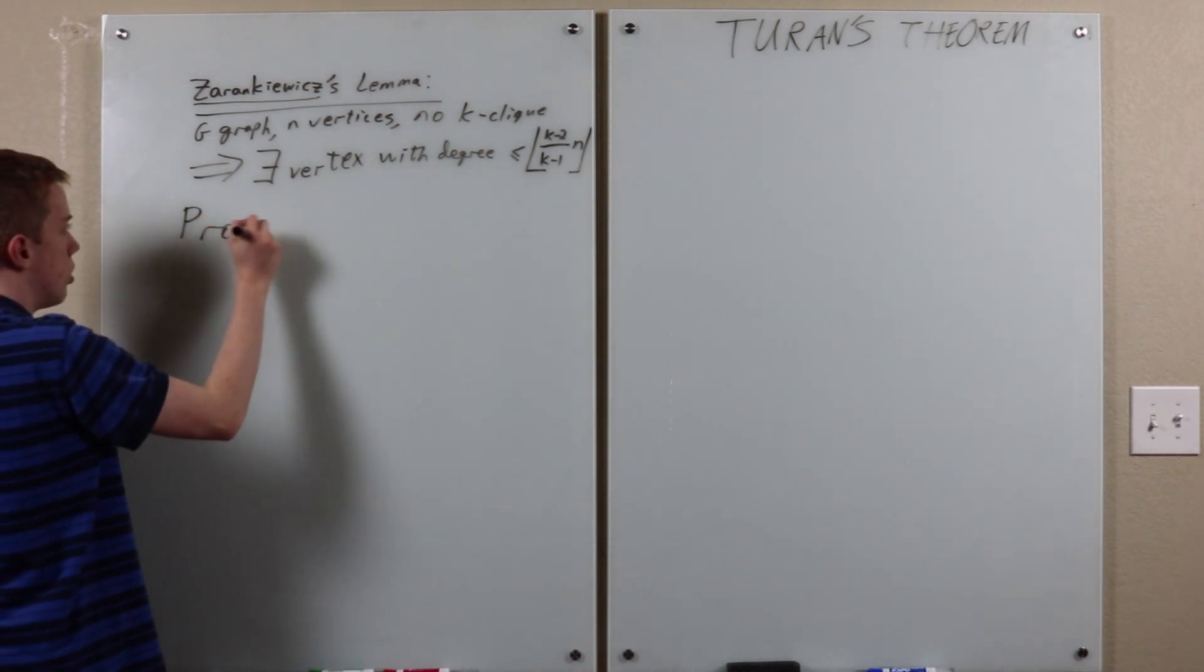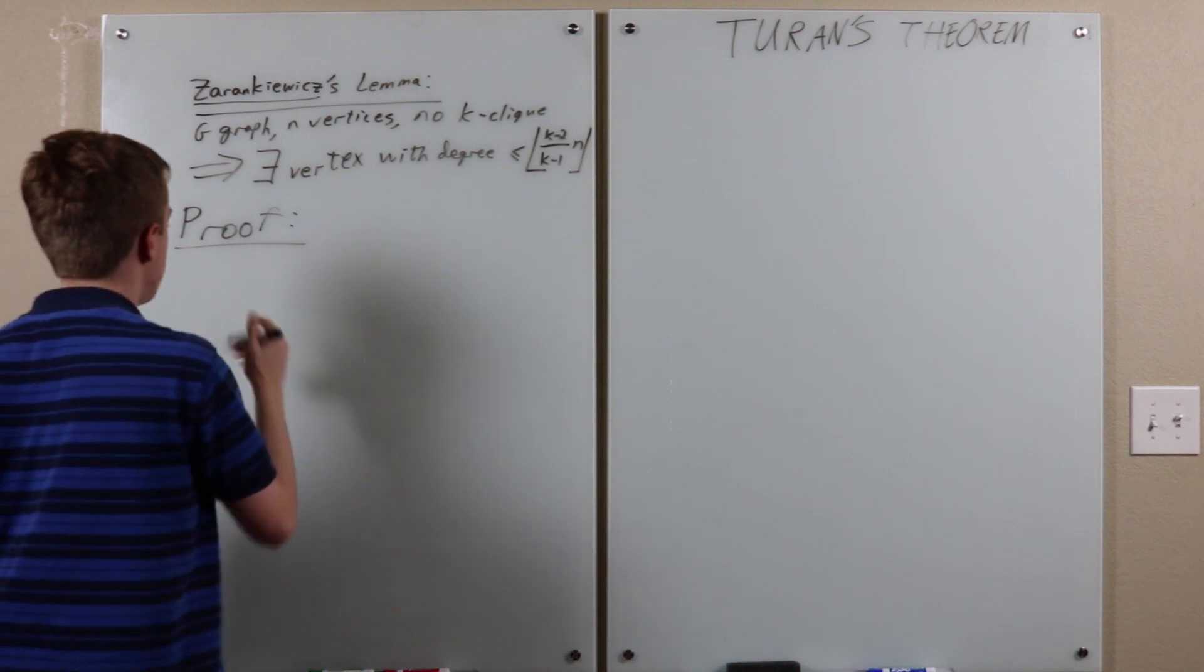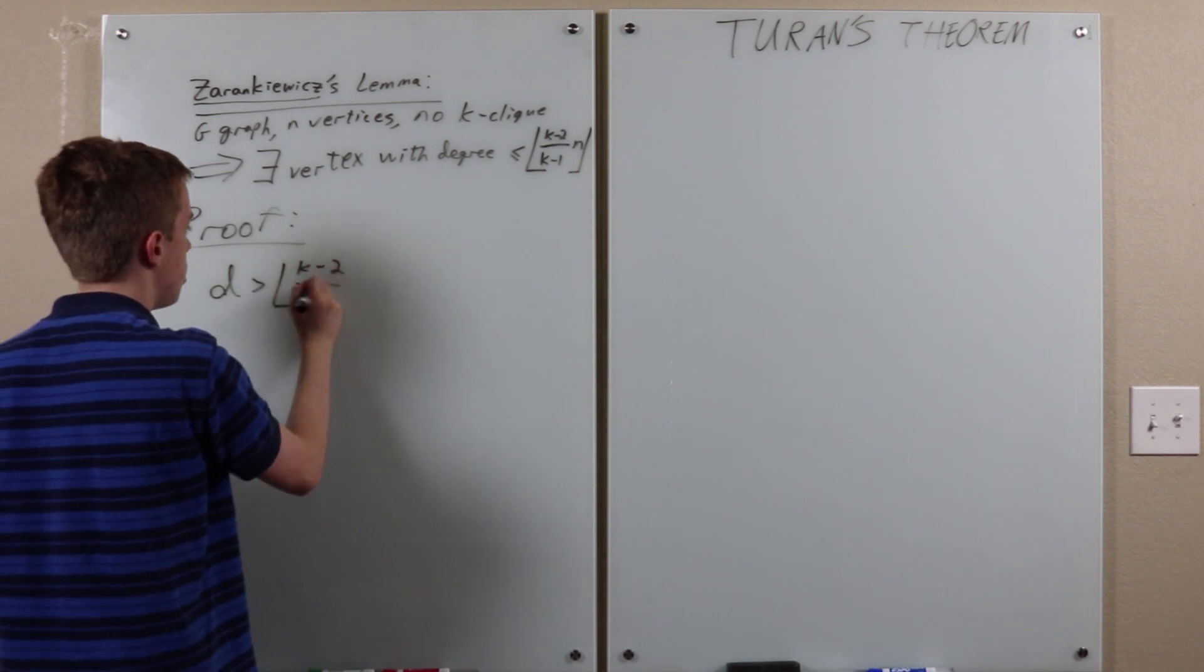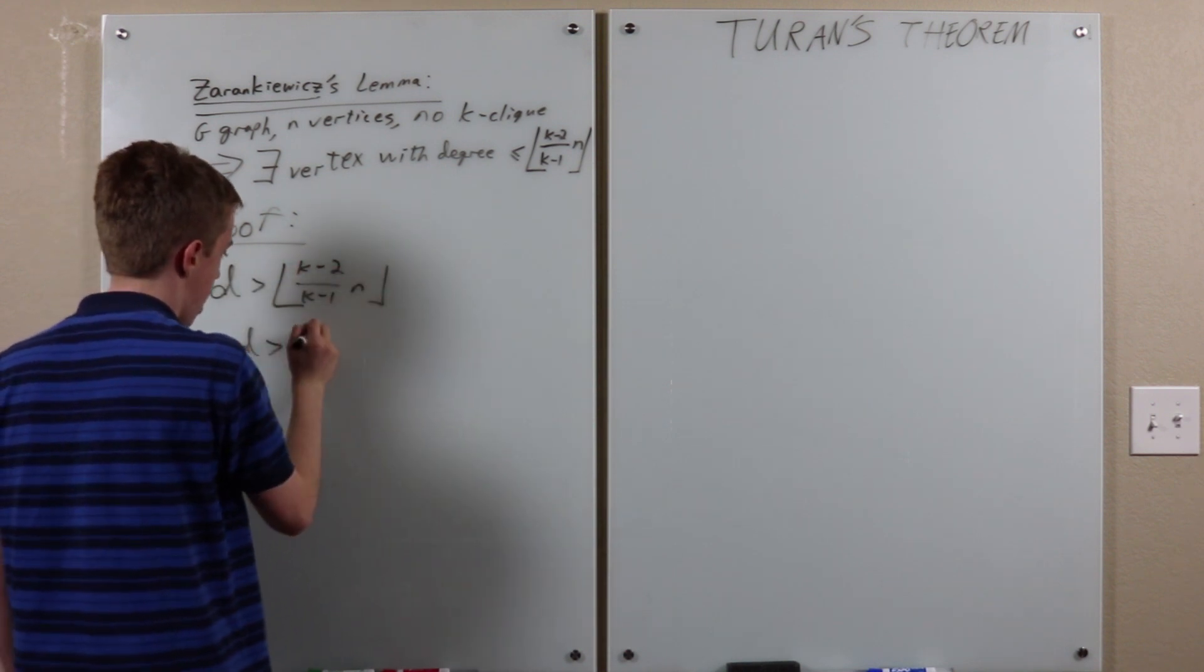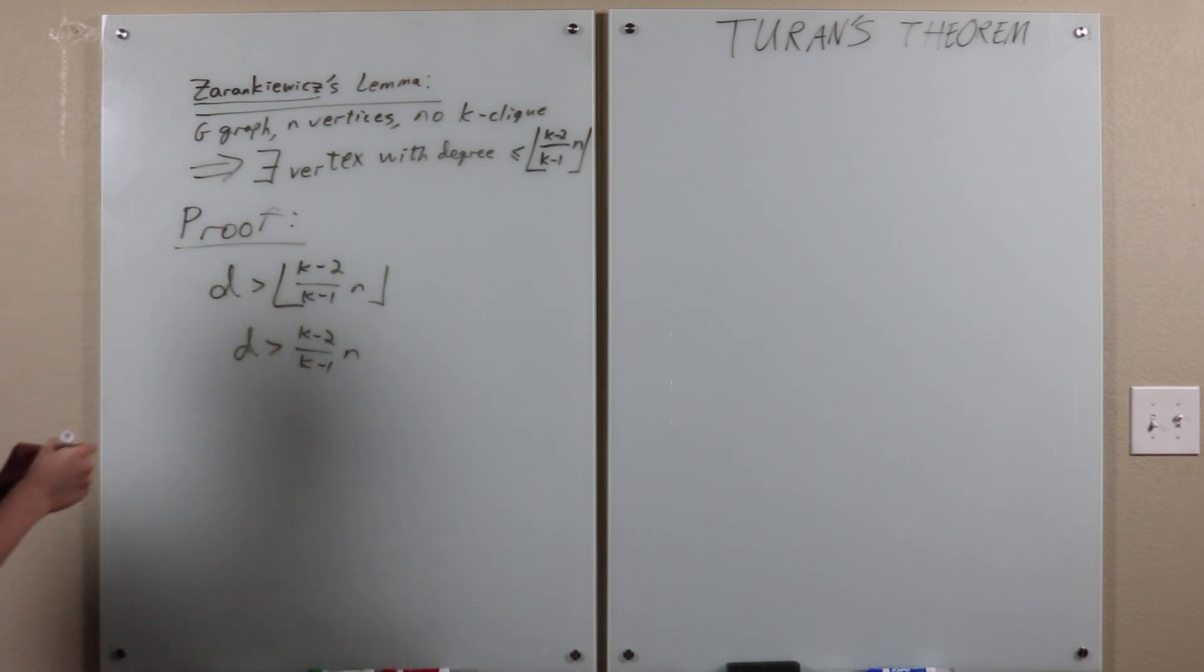Proof? Suppose not. So, proof by contradiction. Then, for every vertex, the degree is strictly greater than this. But it's an integer, meaning the degree is greater than that. Now,